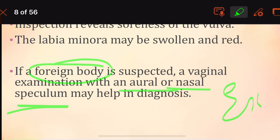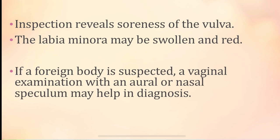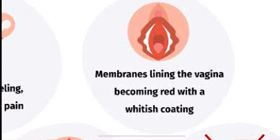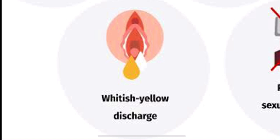The vulva will be sore and the labia minora will be swollen and red. People will have a burning feeling, itching, and pain in the vagina. The membranes lining the vagina will become red with a whitish or yellowish coating — there will be discharge, and pain during sexual intercourse in elderly patients.